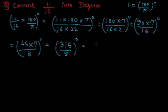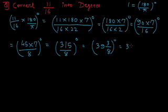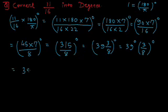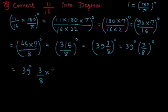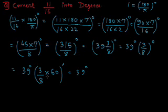Converting 315 by 8 from an improper fraction to a mixed fraction gives 39 and 3 by 8 degrees. We have 39 whole degrees and 3 by 8 degrees remaining. Since 3 by 8 is less than 1 degree, we convert it to minutes. We know 1 degree equals 60 minutes, so we multiply 3 by 8 by 60.